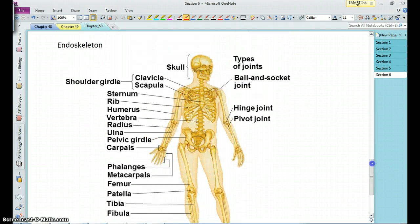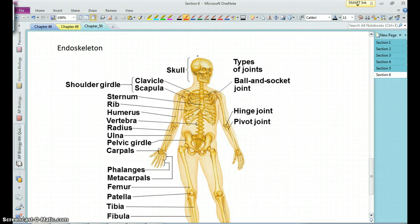You also have some others. You may recall in your skull, for example, you have what are called fixed joints. There's different bones in your skull, but they're fixed in place after you age a while, and they don't move at all.